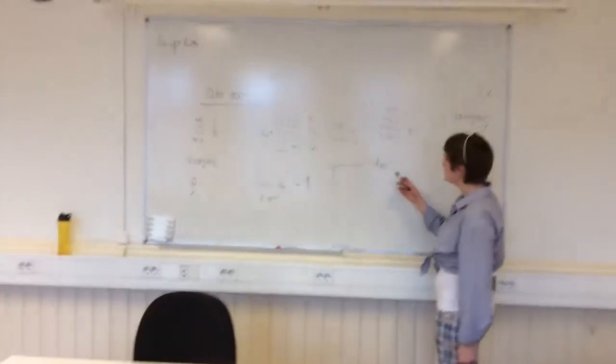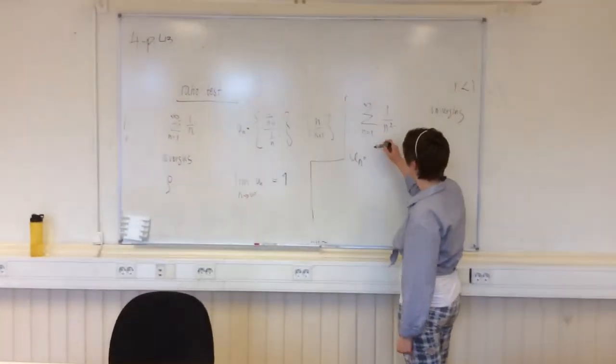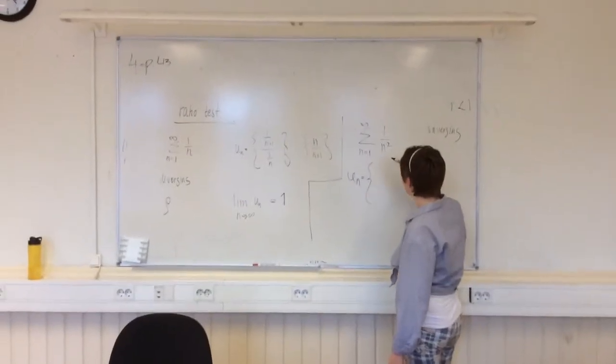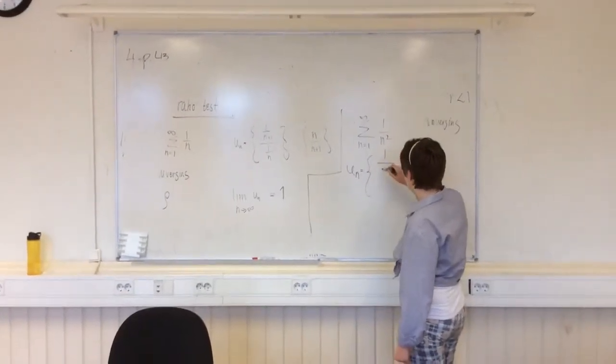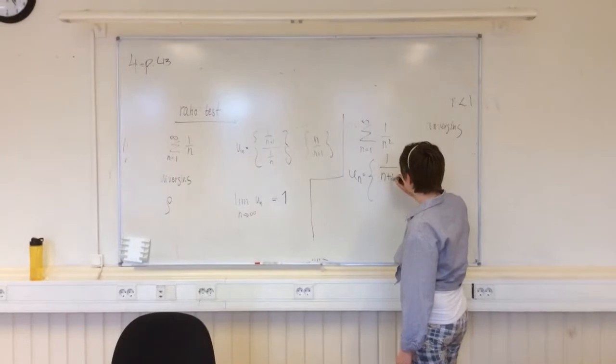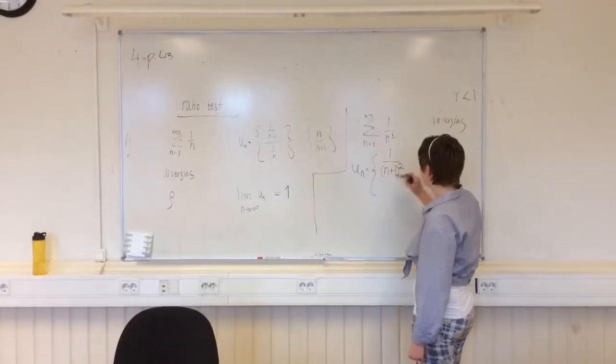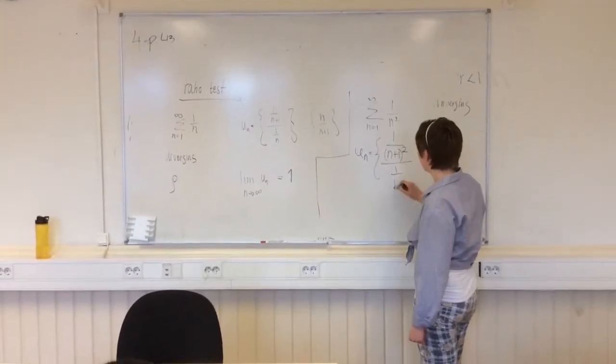So, we want to find the ratio for the sequence: 1 divided by (n+1)² divided by 1 over n².